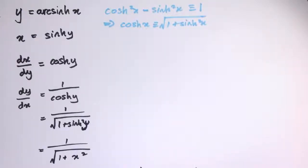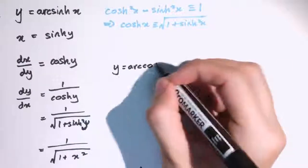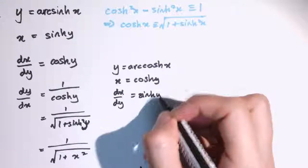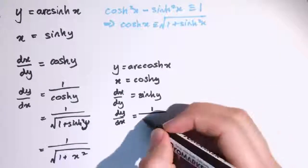We can do something very similar for arc cosh of x. If we write y equals arc cosh x, then x equals cosh y, and dx by dy equals sine y. So dy by dx is 1 over sine y.